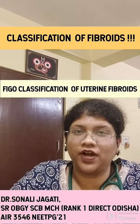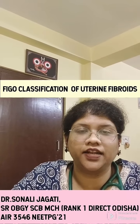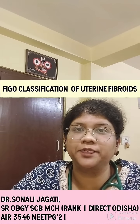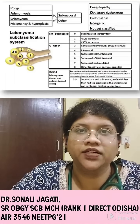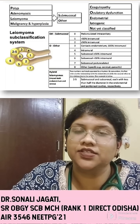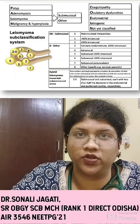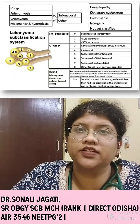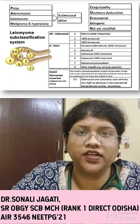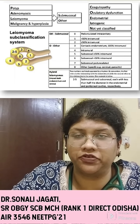What is the FIGO classification of fibroid? Based on the extent of its anatomy, FIGO has classified the fibroid from type 0 to type 8. Type 0 is when it is pedunculated intracavitary. Type 1 is when it is less than 50% intramural. Type 2 is when it is more than 50% intramural. Type 3 is when it is 100% intramural but contacts the endometrium.